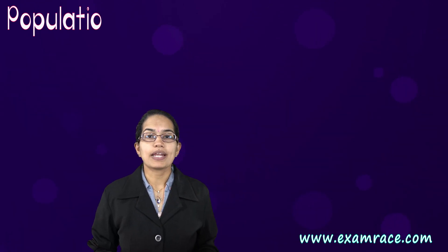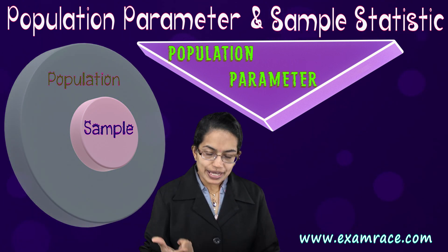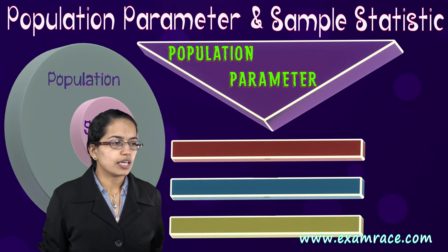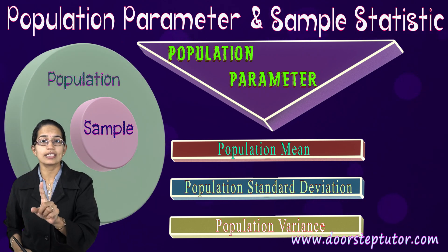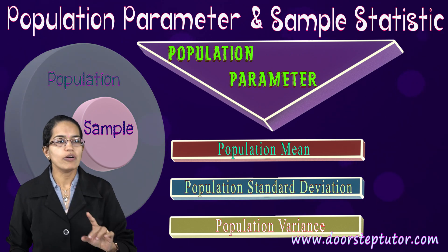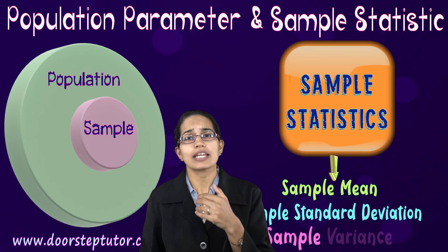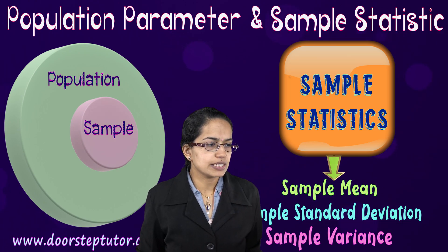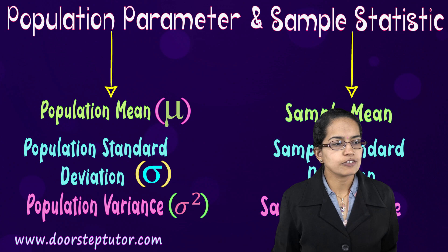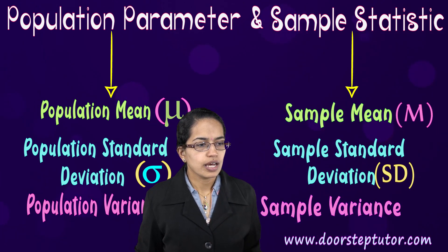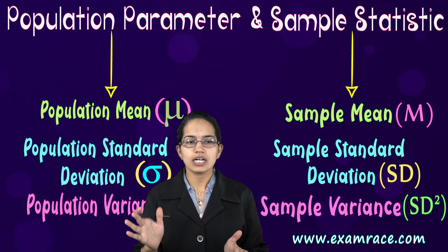The next important thing is understanding the population parameter and the sample statistic. When do you call something a population parameter? Based on three simple parameters — mean, standard deviation, and variance — we understand the population parameter when taking these for the whole population. However, if I take the same values for the sample, it would be sample mean, sample standard deviation, and sample variance, aiming to represent the population at a bigger goal. The signs used to represent population parameters and sample statistics are a little different.